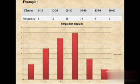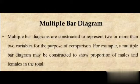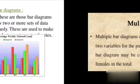Now definition of multiple bar diagram. These are constructed to represent two or more than two variables for the purpose of comparison. So one more example to show males and females in the total, or you can see in the spec.